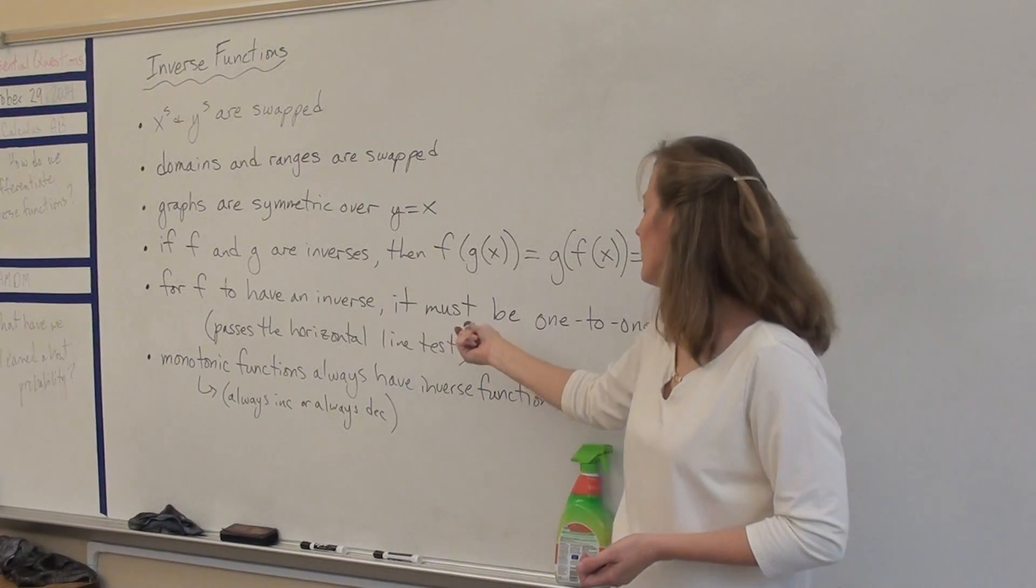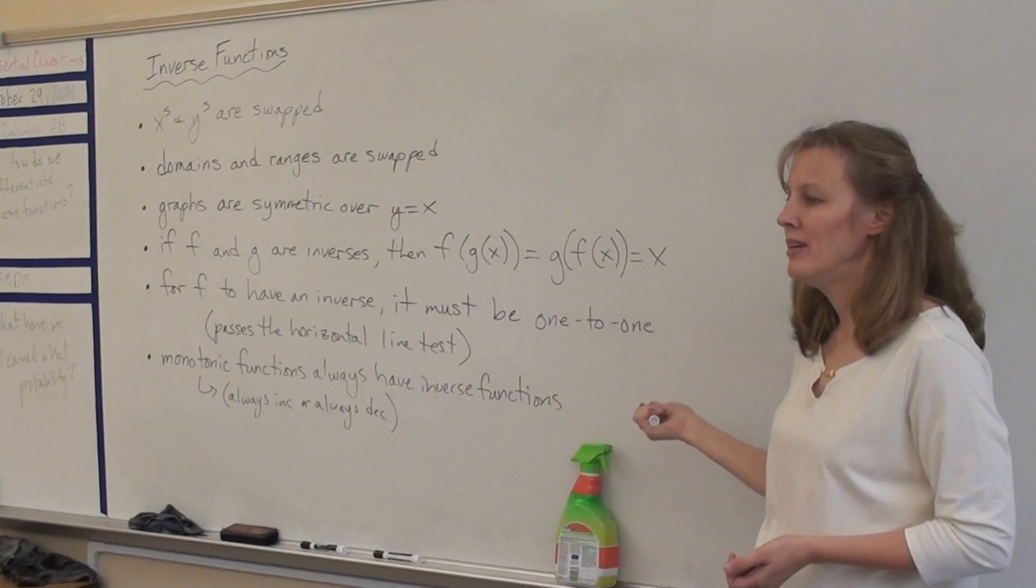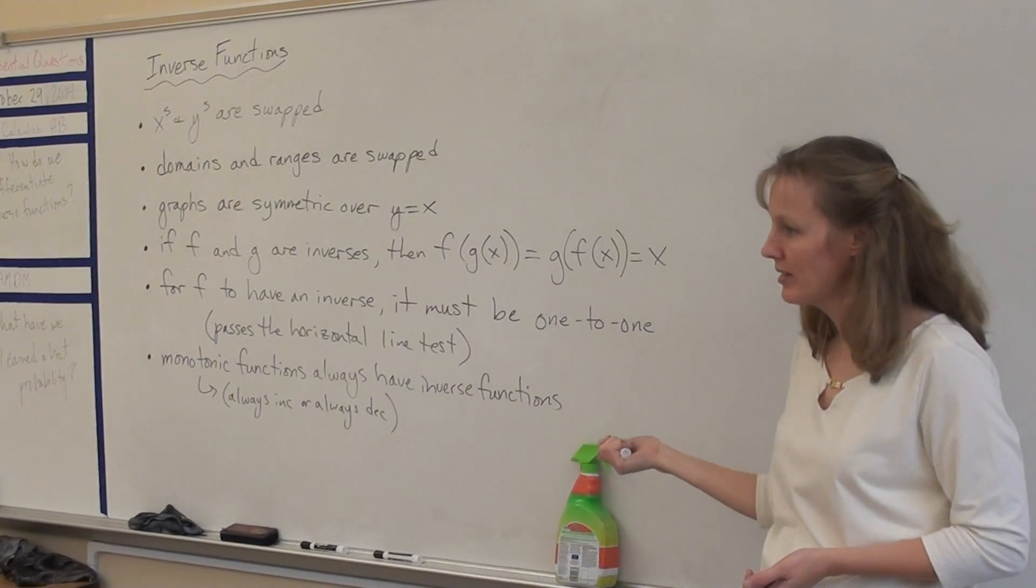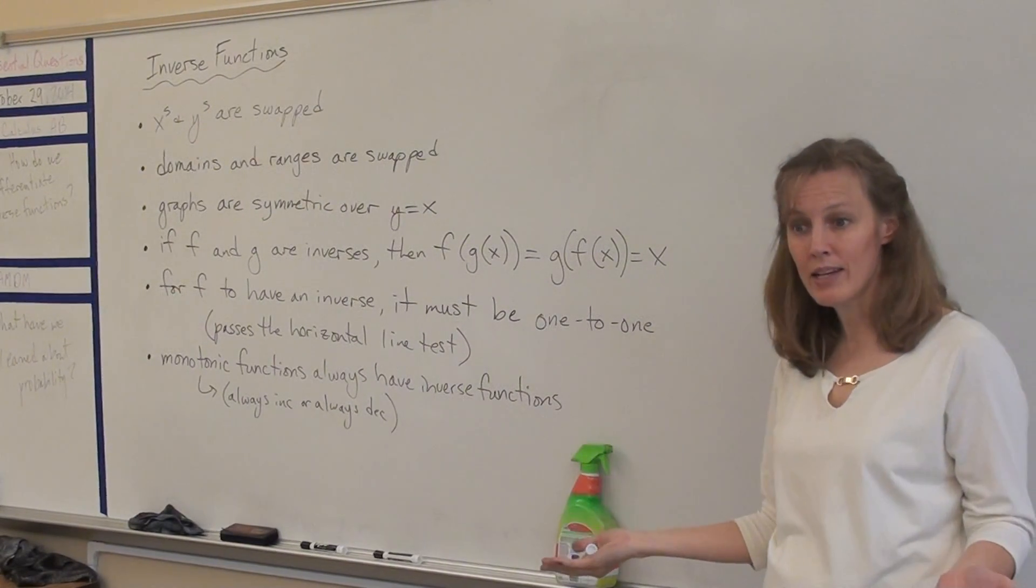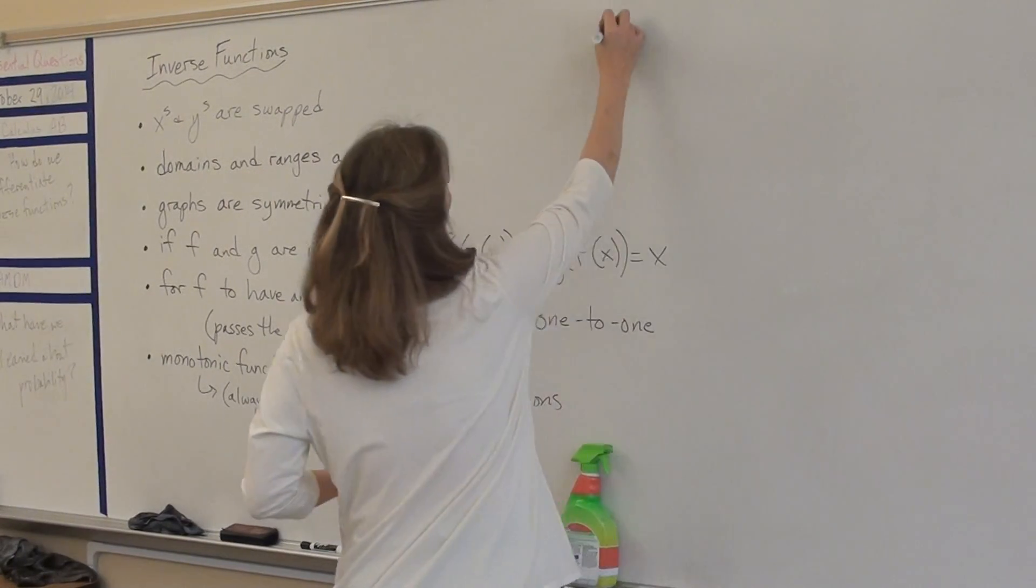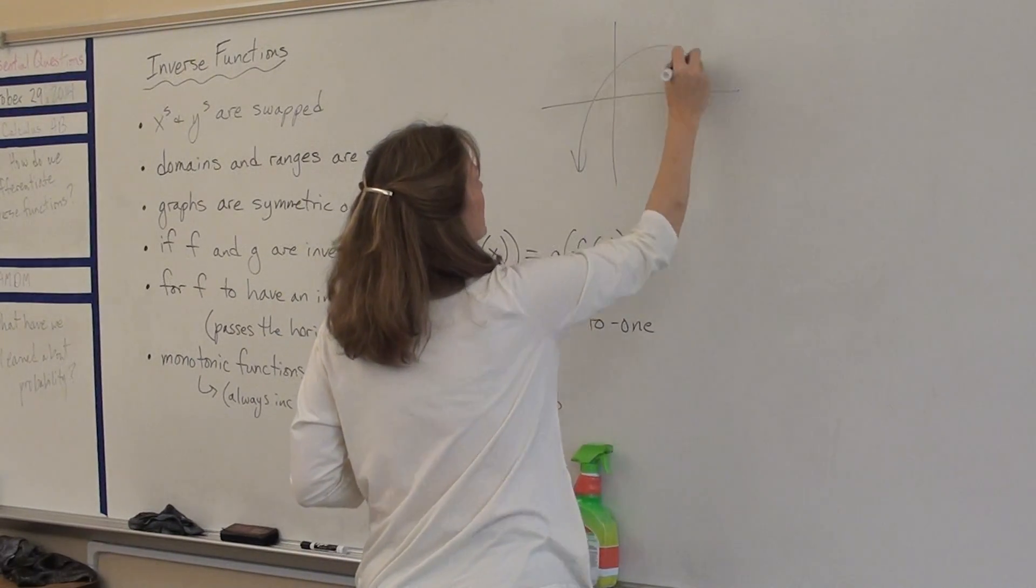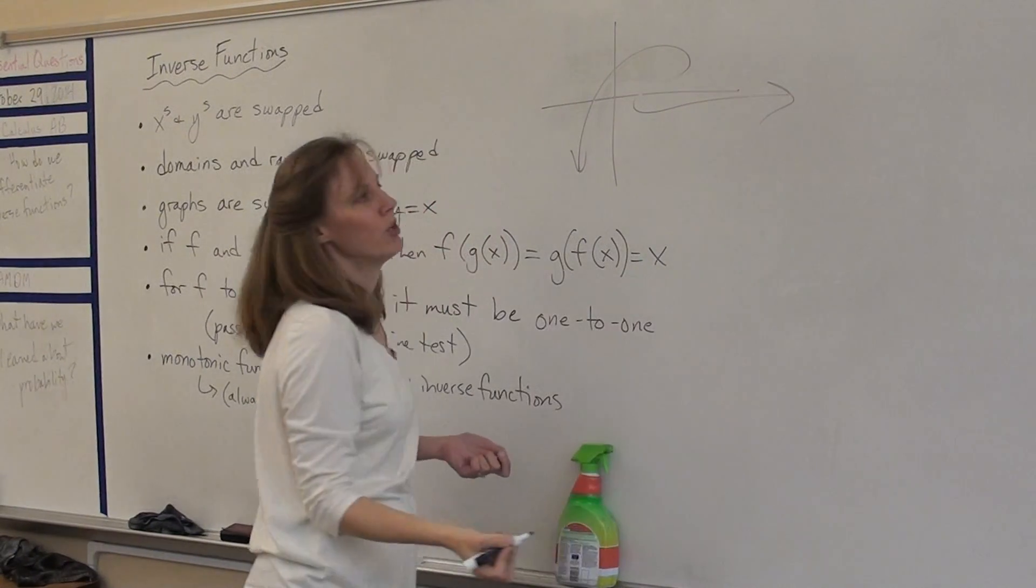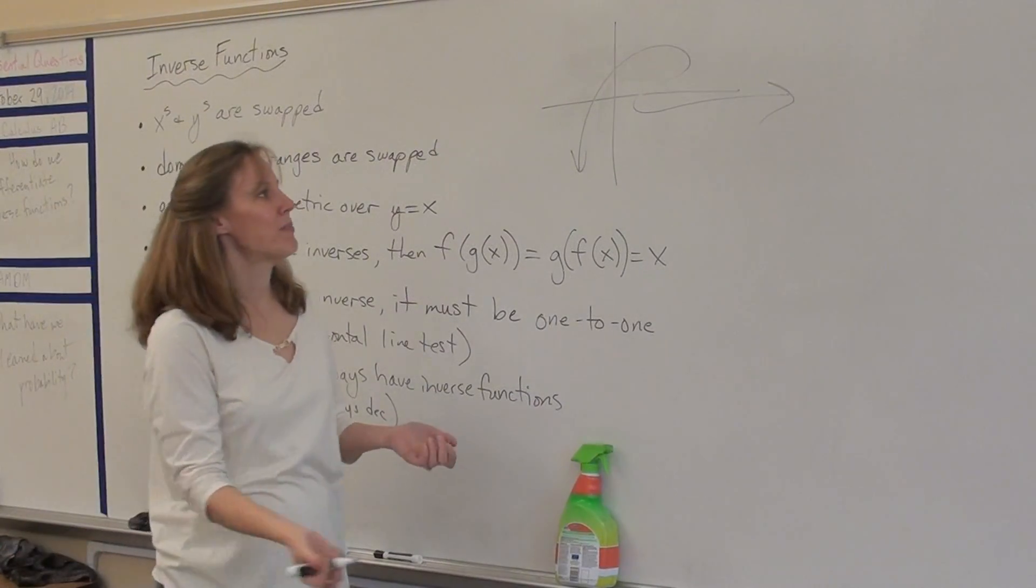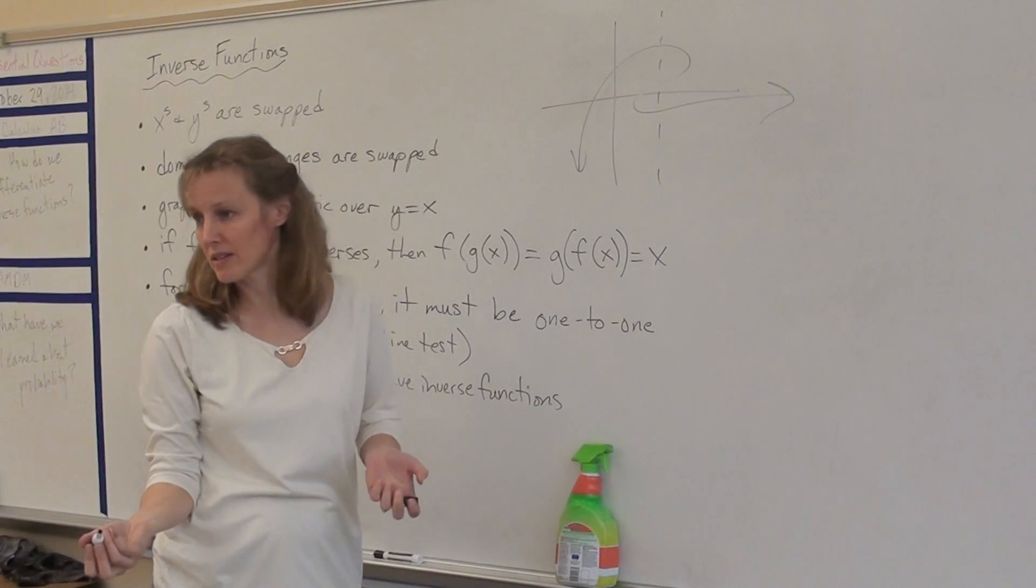For f to have an inverse, it has to be one-to-one. One-to-one means that the function passes the horizontal line test. What's the horizontal line test? Well, it's just like the vertical line test. If you have a graph and it's something that looks like this, some weird graph, this graph would not be a function because the vertical line passes through it in more than one spot.